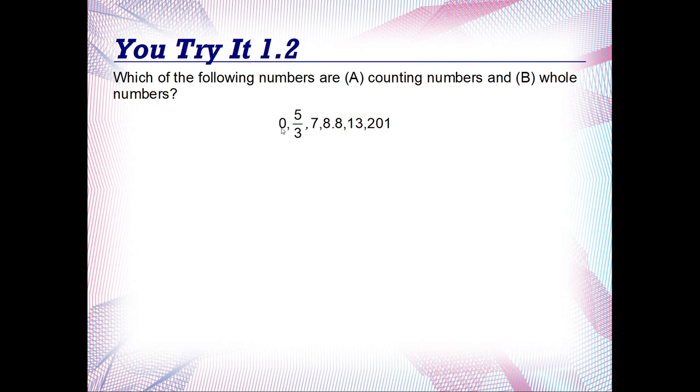Let's start with zero. We know zero is not a counting number but it is a whole number. Five-thirds is a fraction. We haven't dealt with fractions, so most likely, and it is the fact that five-thirds is not a counting number.